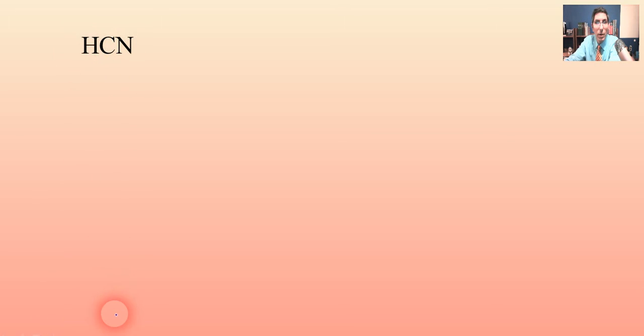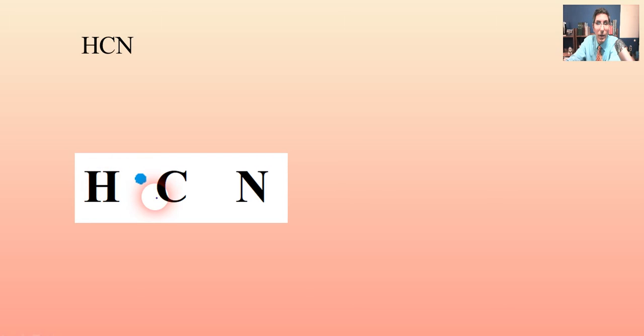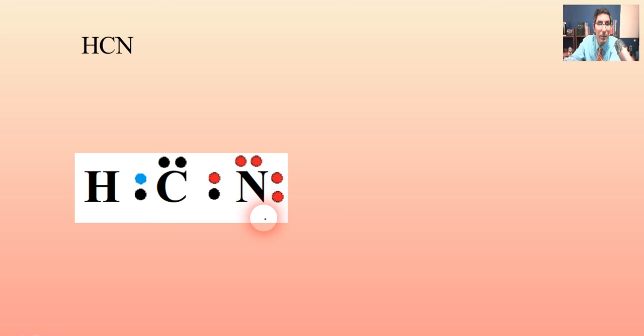Let's try HCN — hydrogen cyanide or hydrocyanic acid. We're going to start by writing the three elements: H for hydrogen, C for carbon, and N for nitrogen. Every hydrogen supplies one valence electron and is stable with two, so I'll put one dot there for the hydrogen. Carbon has four dots, and nitrogen has five because it's in group 15.